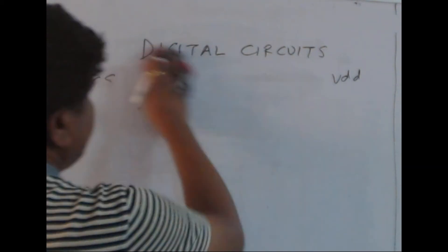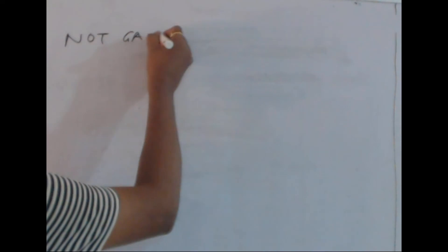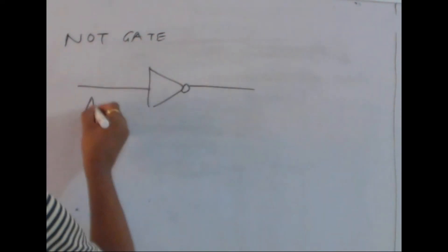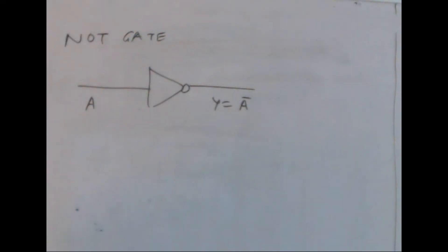Let us try to understand basic terminology. If I have a NOT logic or NOT gate - input is A, output is equal to A bar - I can call this a Boolean expression.